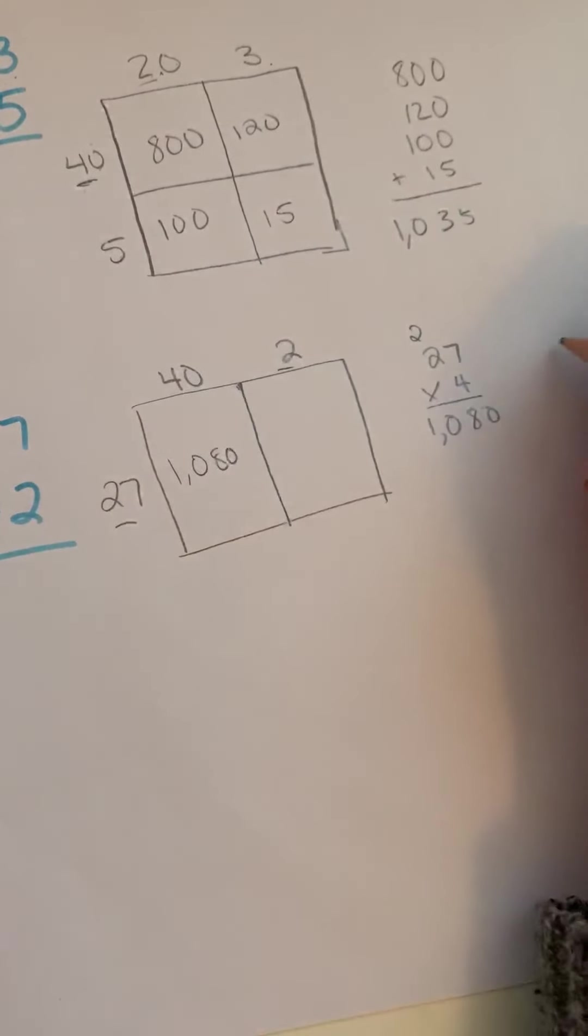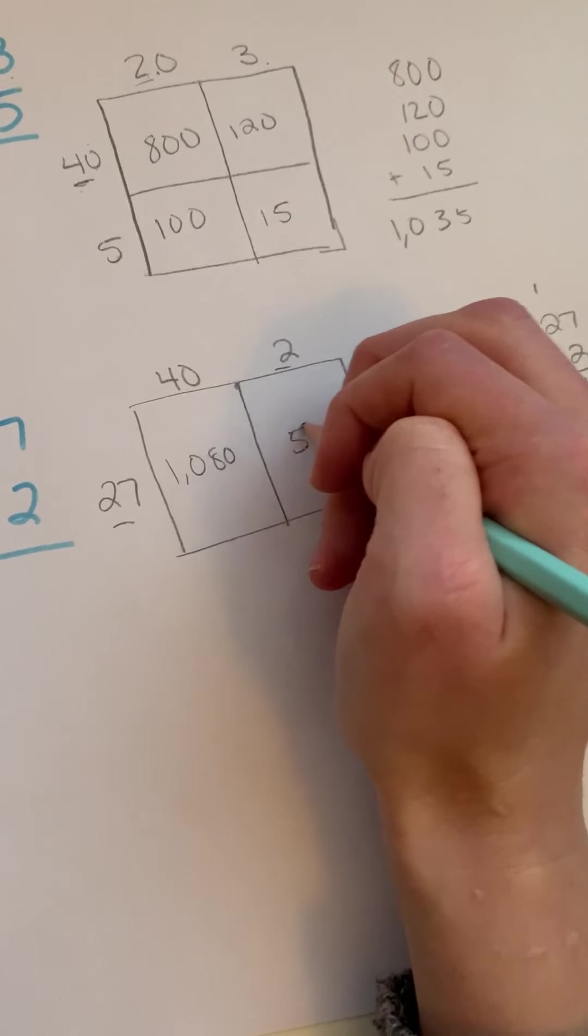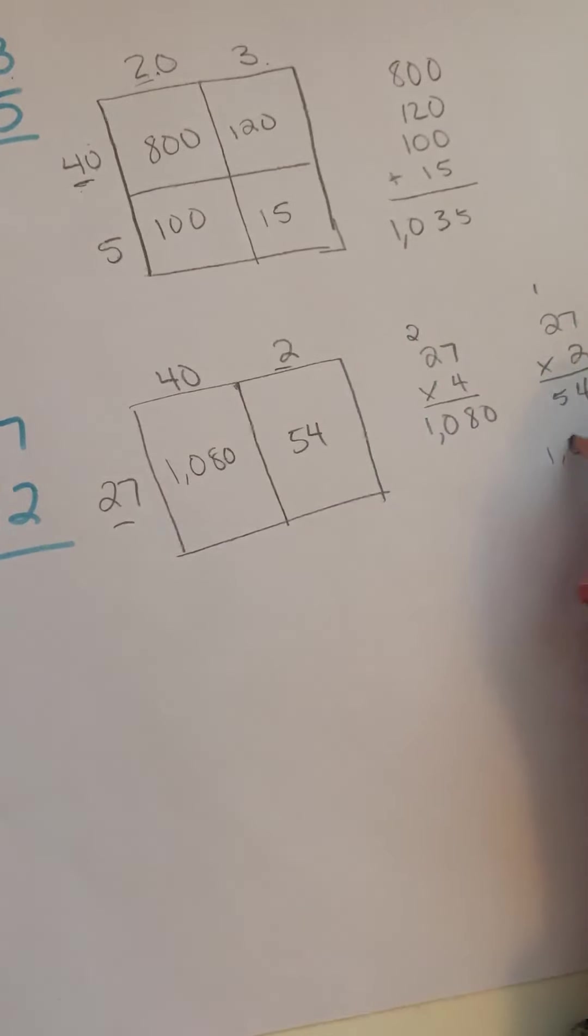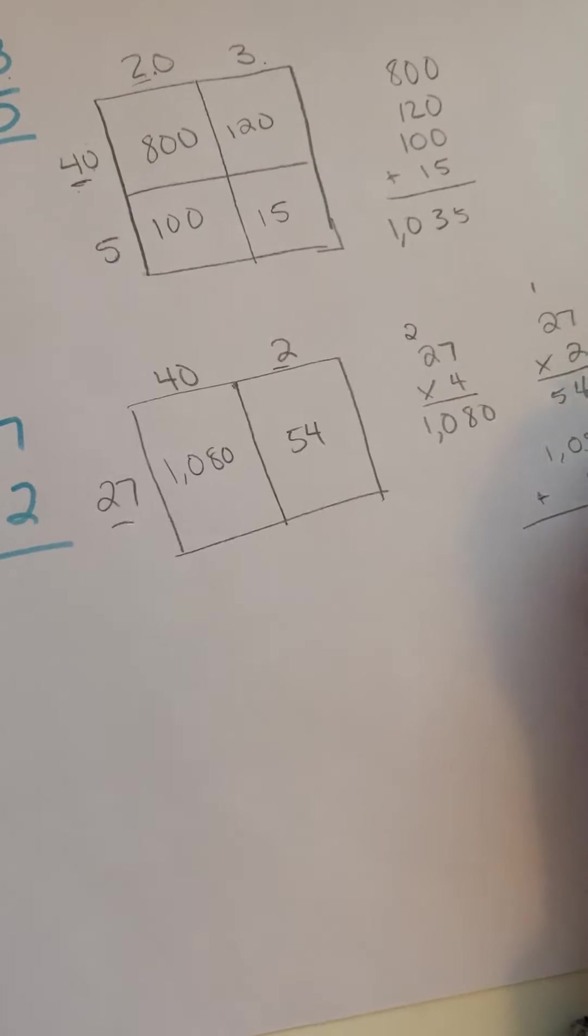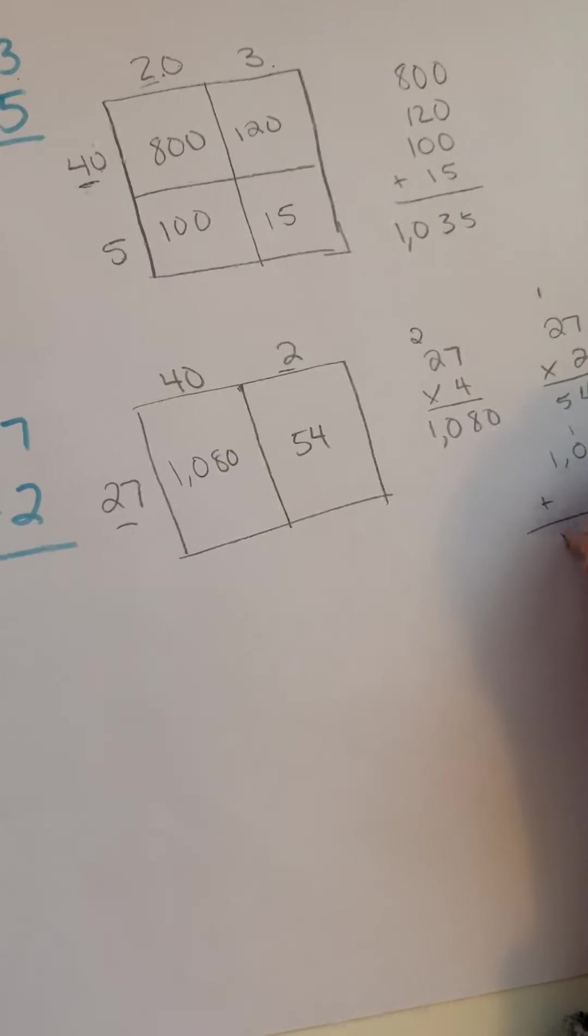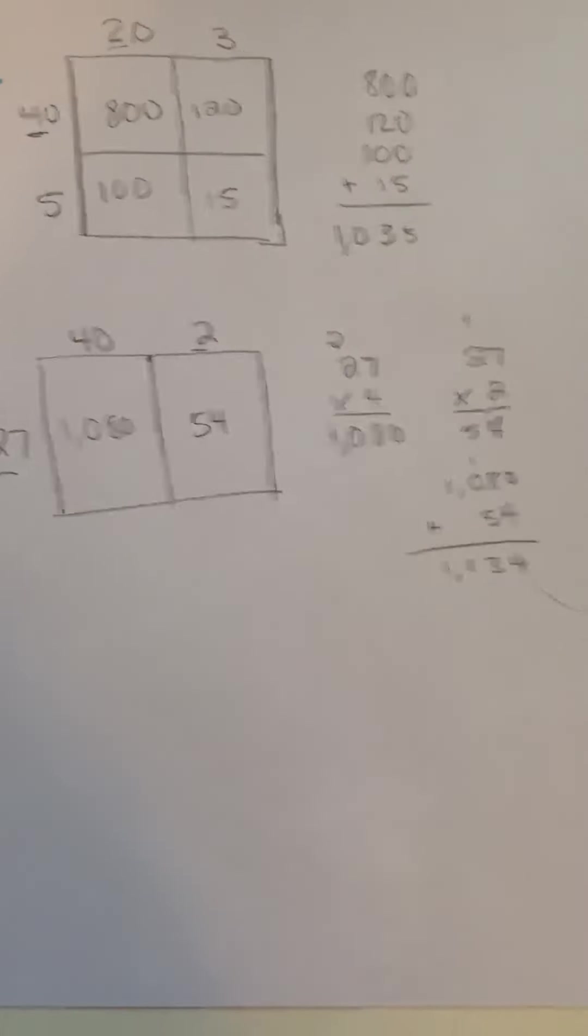And then taking this problem, 27 times 2. And then adding the two numbers together. Getting 1134.